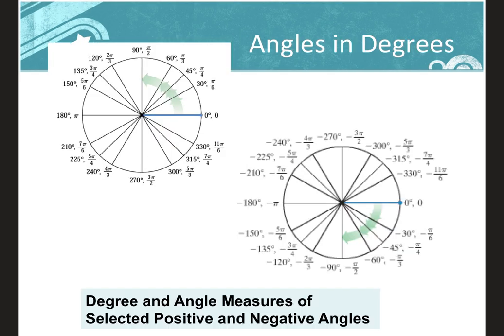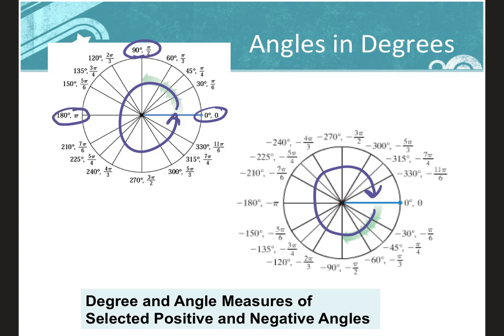Going counterclockwise gives positive angles; going clockwise gives negative angles. Today we'll learn about all the special angles in both degrees and radians. Zero radians is zero degrees, pi over two is 90 degrees at the top, pi is 180 degrees on the left, three pi over two is 270 degrees at the bottom, and two pi is 360 degrees. Going negative, negative 90 is at the bottom, negative 180 on the left, negative 270 at the top, and negative 360 all the way back around.